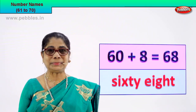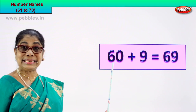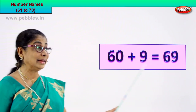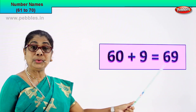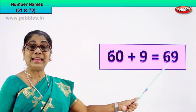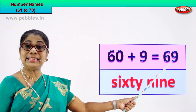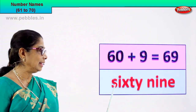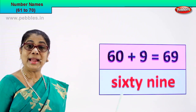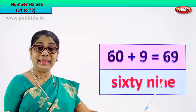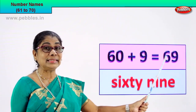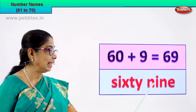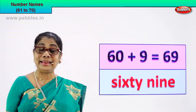Shall we go to our next number? 60 plus 9 is equal to 69. 6 and 9, 69. That's the numeral. How do we spell and write its name? You can spell 60 and you can spell 9 — that's it! S-I-X-T-Y, and N-I-N-E. Numeral 6 and 9, 69. Its name is sixty-nine.